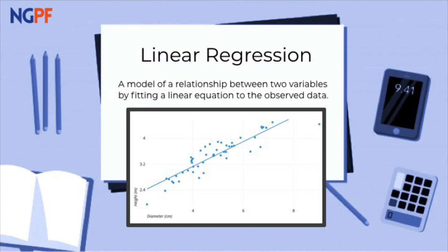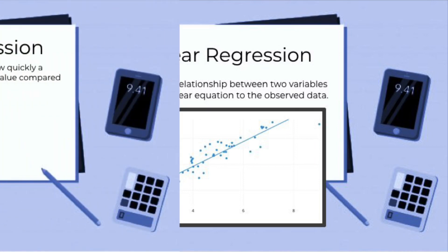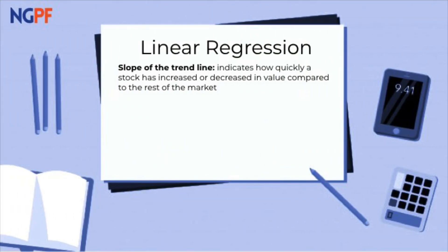A couple of things to zoom in on when looking at linear regressions for stock performances. Looking at the slope of the trend line tells you how quickly a stock has increased or decreased in value when compared to the rest of the market, like using the S&P 500 as a proxy.